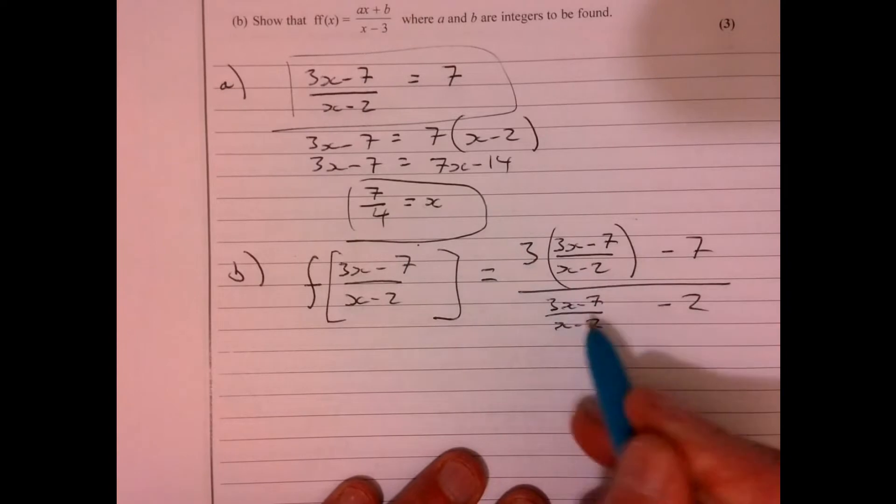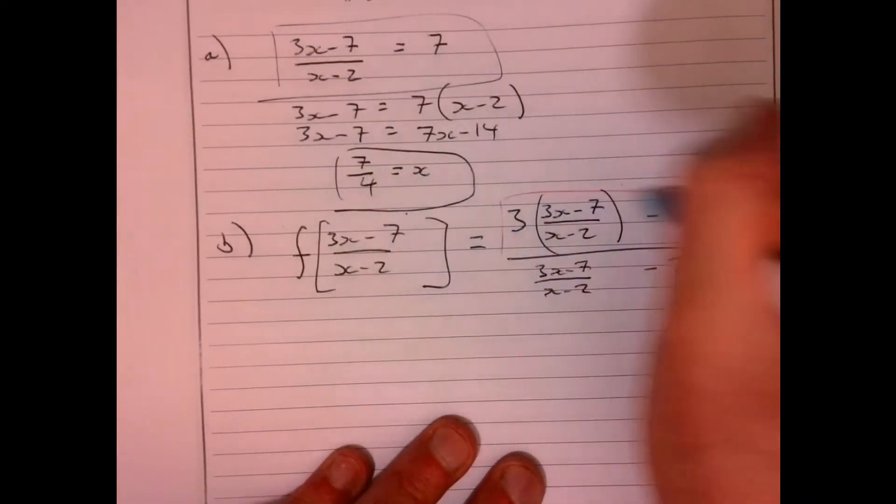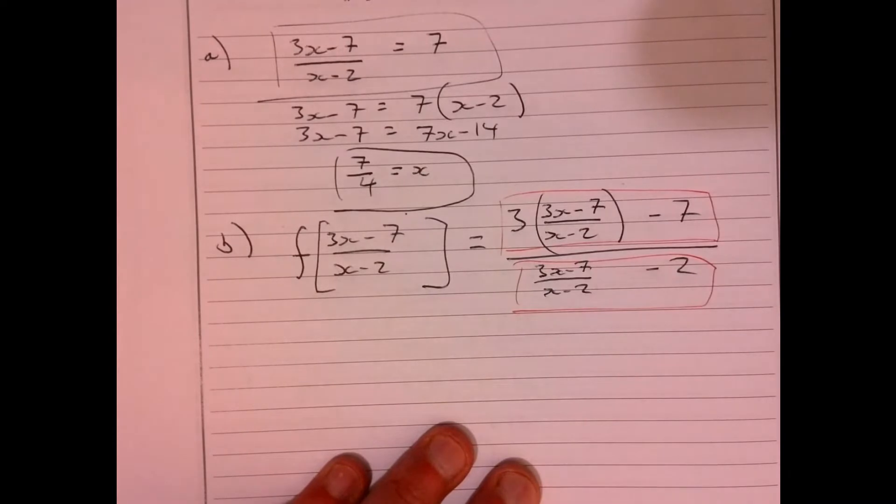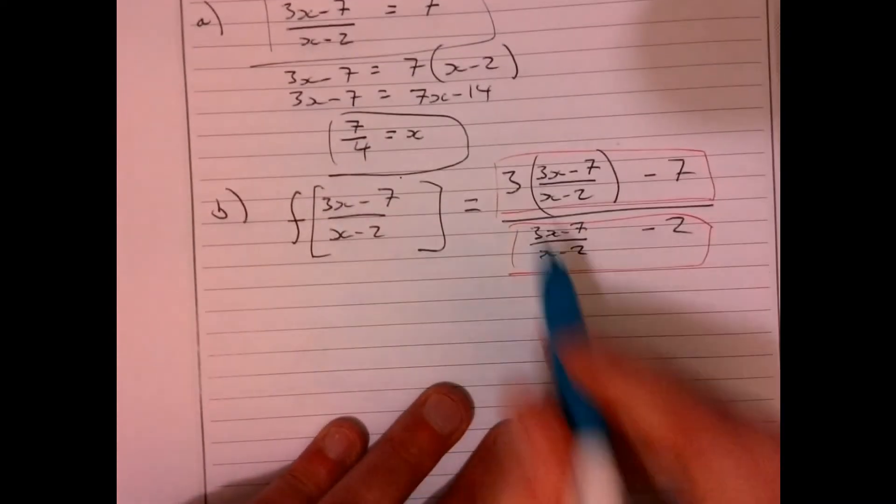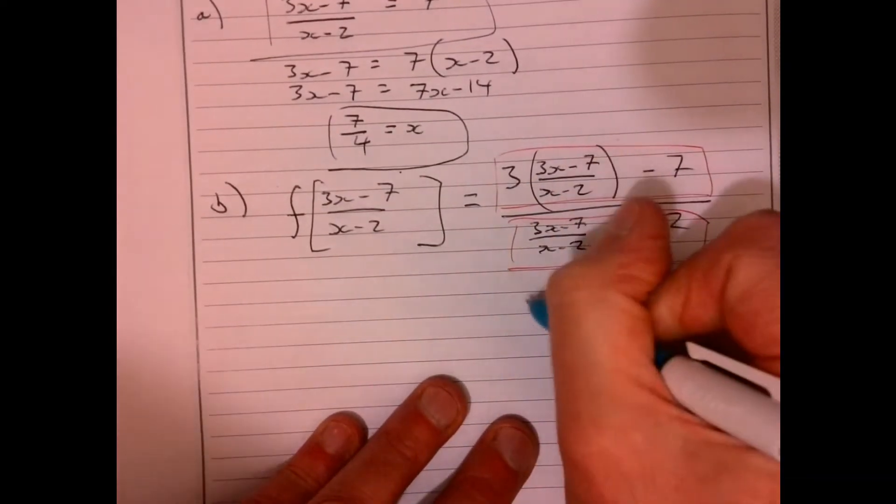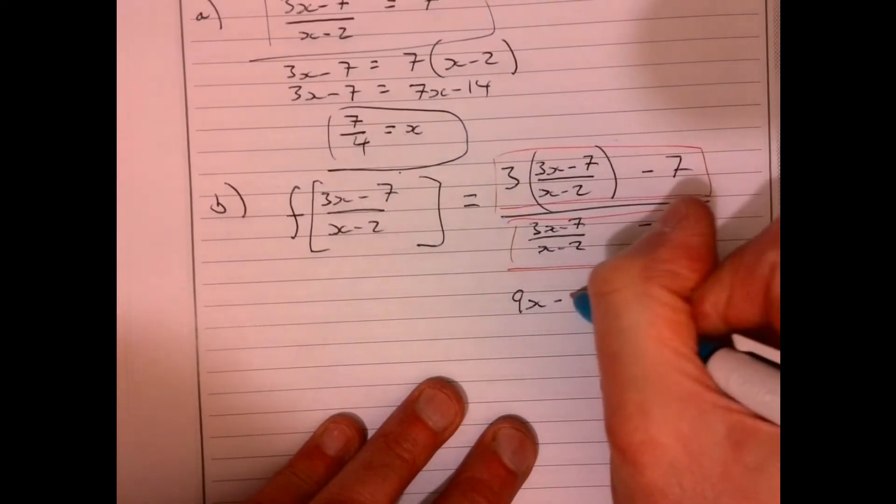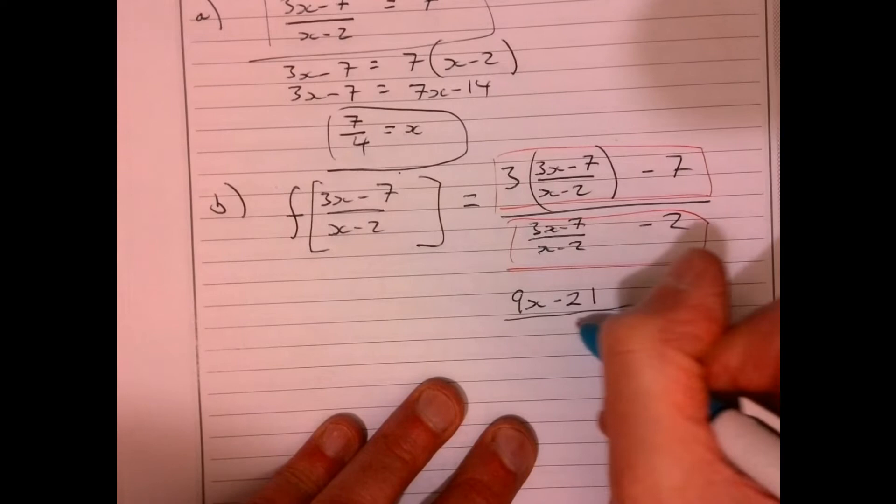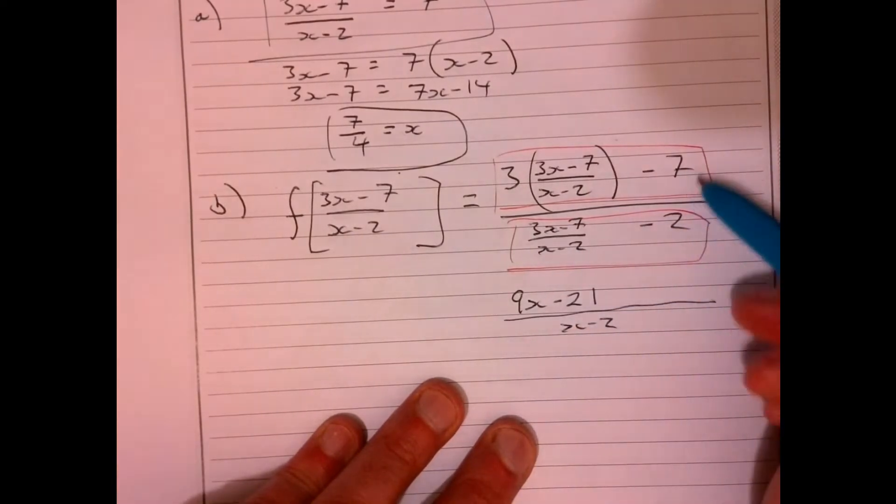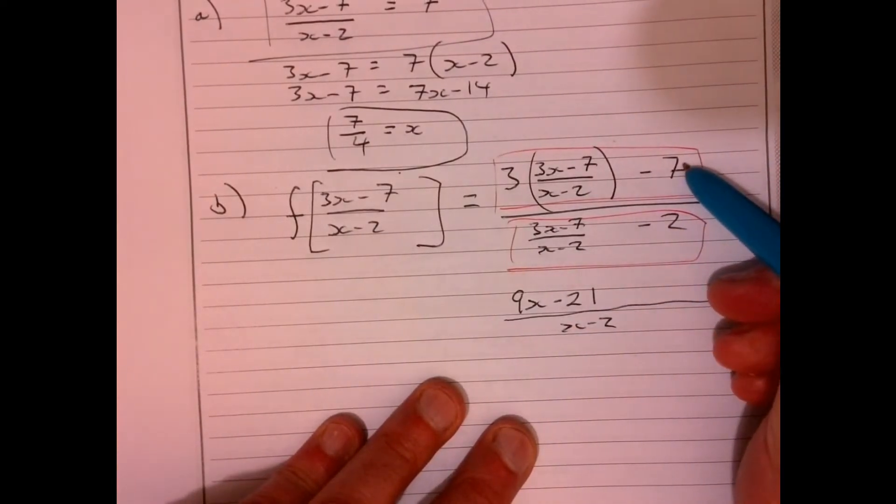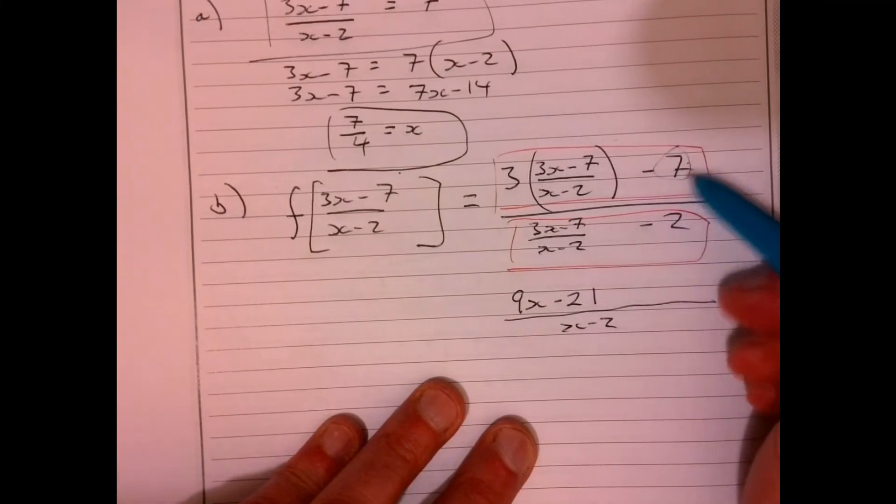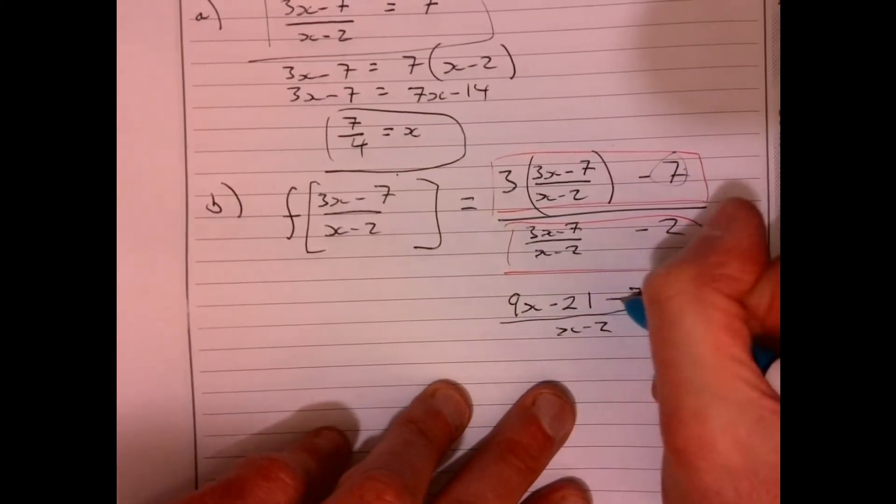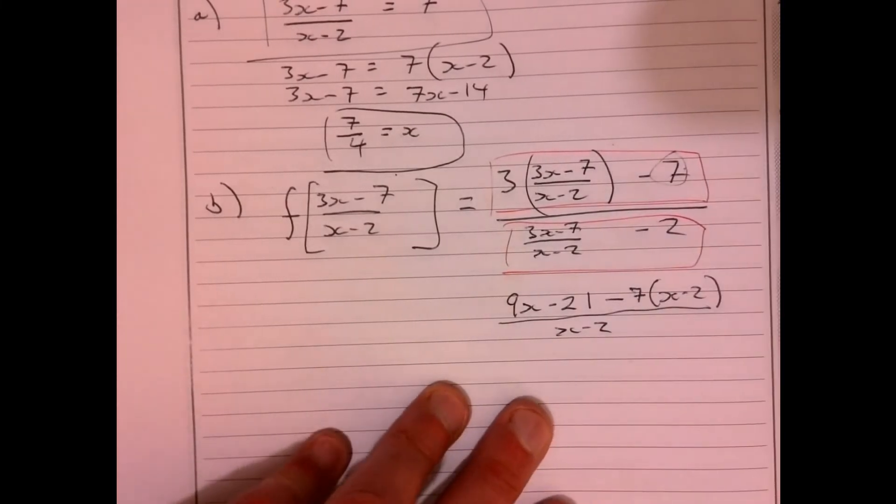Now, it looks really horrible, this. But let's just kind of think about it section at a time. And then we'll just work it through from there. So if I multiply this one out, what have I got? I've got 9x take away 21, and then that's over x minus 2. Now I need to get this over x minus 2 as well. So if I multiply this by x minus 2 over x minus 2, so then it becomes like that.